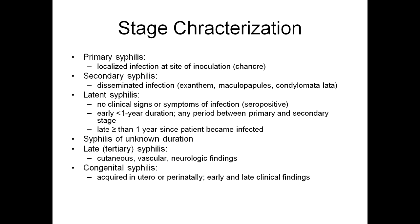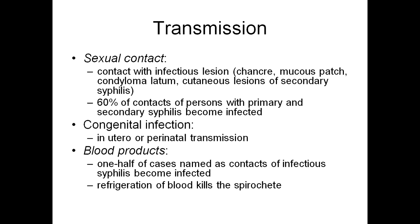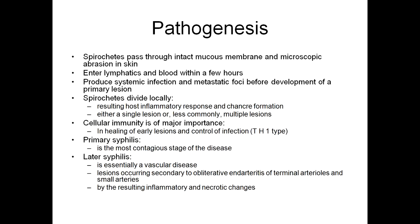Regarding transmission: it is a sexually transmitted disease. Contact with infectious lesions like chancre, mucous patch, condyloma latum, and cutaneous lesions of secondary syphilis. Congenital infection occurs in utero or through perinatal transmission. It is also transmitted through blood products. One half of cases named as contacts of infectious syphilis became infected. Refrigeration of blood kills this spirochete.